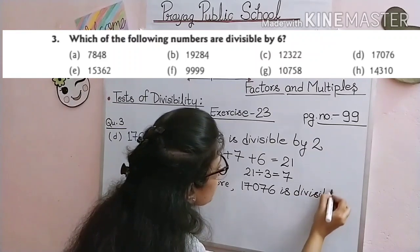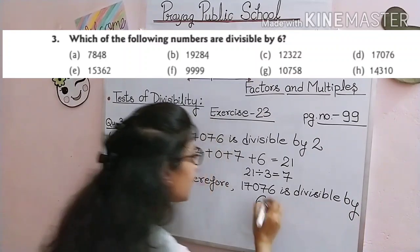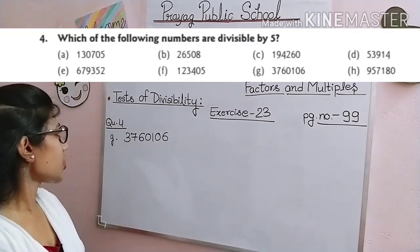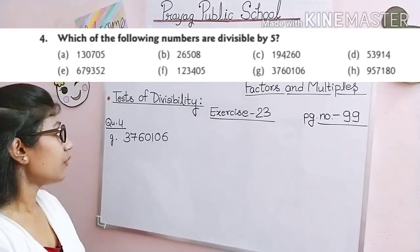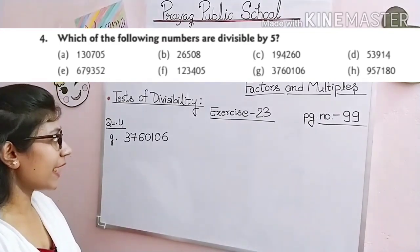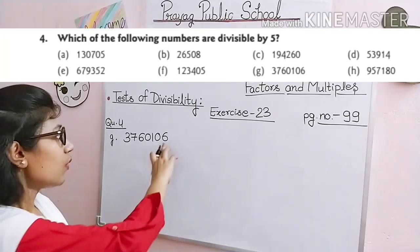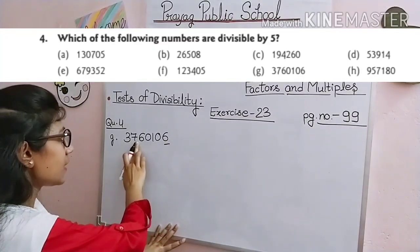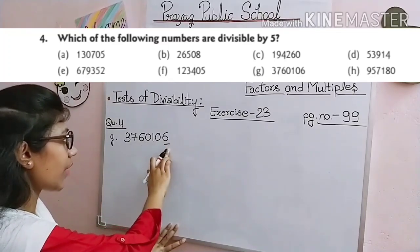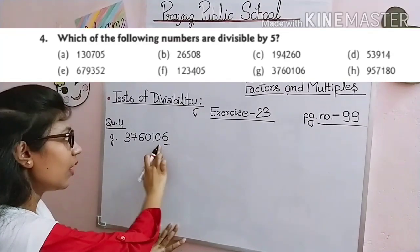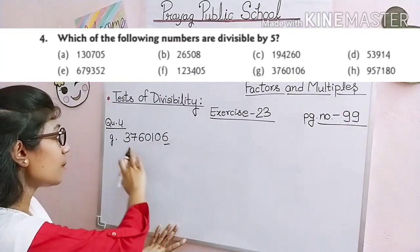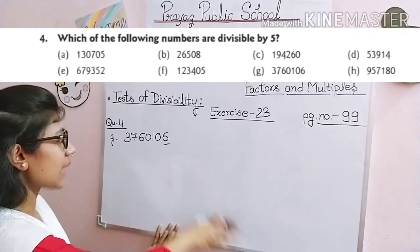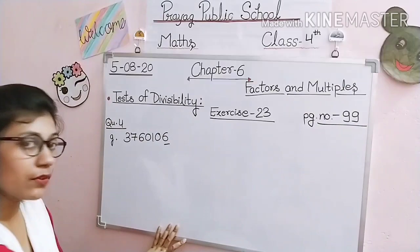Since the given number is divisible by both 2 and 3, therefore this number is also divisible by 6. In the same way, solve the remaining questions. Next question is question number 4: check whether the given numbers are divisible by 5. We just read the rule — a given number is divisible by 5 when it ends in 5 or 0. But this number ends in 6, so 37,60,106 is not divisible by 5. In the same way, check the remaining numbers for divisibility by 5.